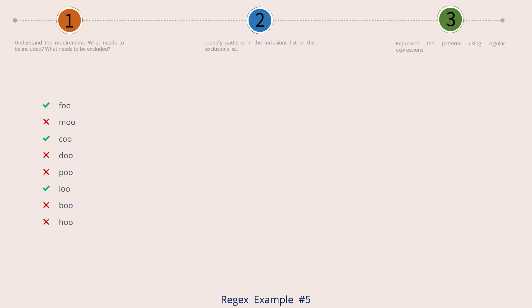Let's move to the next step. We'll find a way to make them differ. We have a single imaginary dotted line vertical separator which divides each string into two different sections. On the left of the separator we have a single letter: F for the first string, C for the second, L for the third. On the right of the separator we have OO, which is common to all strings.